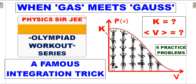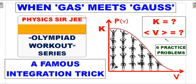Let's see what happens when an ideal gas has a hypothetical probability distribution for its velocities as a Gaussian distribution. It involves a famous integration trick and the area under the Gaussian curve. I'll introduce you to a school-level trick essential for your Olympiad preparations. We'll also top it off with six practice problems, some of which are candidates for your JEE Advanced examinations.